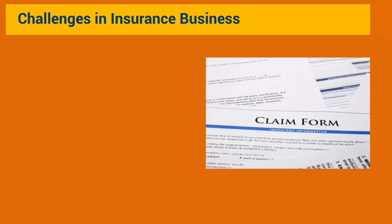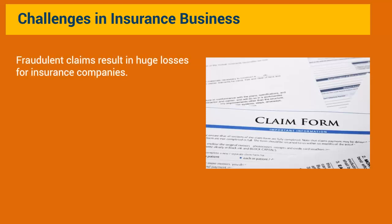Every insurance company wants to reduce claim cycle time by making decisions in real time when processing a new claim. But in doing so, they also want to ensure that the right claims are being honored. Insurance companies incur huge losses due to fraudulent claims and constantly strive to reduce the number of fraudulent claims they receive, which in turn protects them from incurring huge losses.